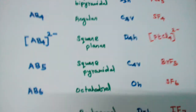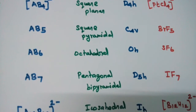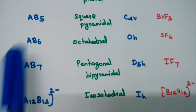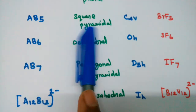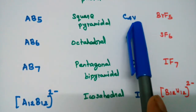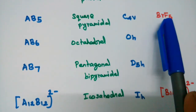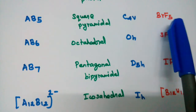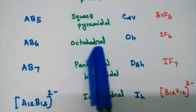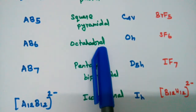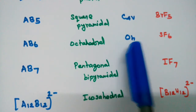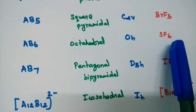Next, AB5 square pyramidal structure, point group C4v, example bromine pentafluoride. Next, AB6 octahedral geometry, point group Oh, example SF6.